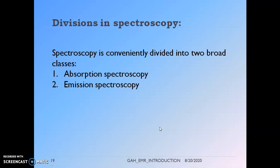Molecular spectroscopy deals with the interaction of electromagnetic radiations with molecules, whereas atomic spectroscopy involved interaction with atoms in the ground state. In molecular spectroscopy, this interaction results in transitions between rotational and vibrational energy levels, in addition to electronic transitions. Because there are many energy levels — rotational, vibrational, and electronic — the spectra obtained from molecular spectroscopy are more complicated than atomic spectra. A separate video on molecular energies and the various molecular energy levels will be shared shortly after this one.